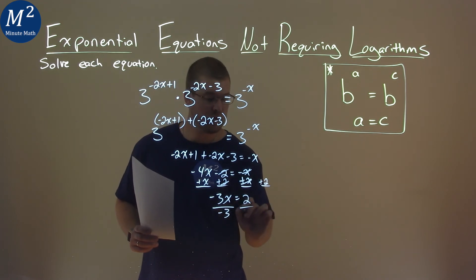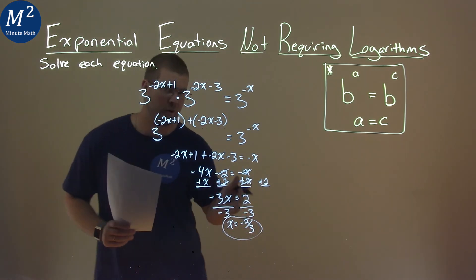Divide both sides by a negative 3, and x equals a negative 2 thirds, and that is our final answer.